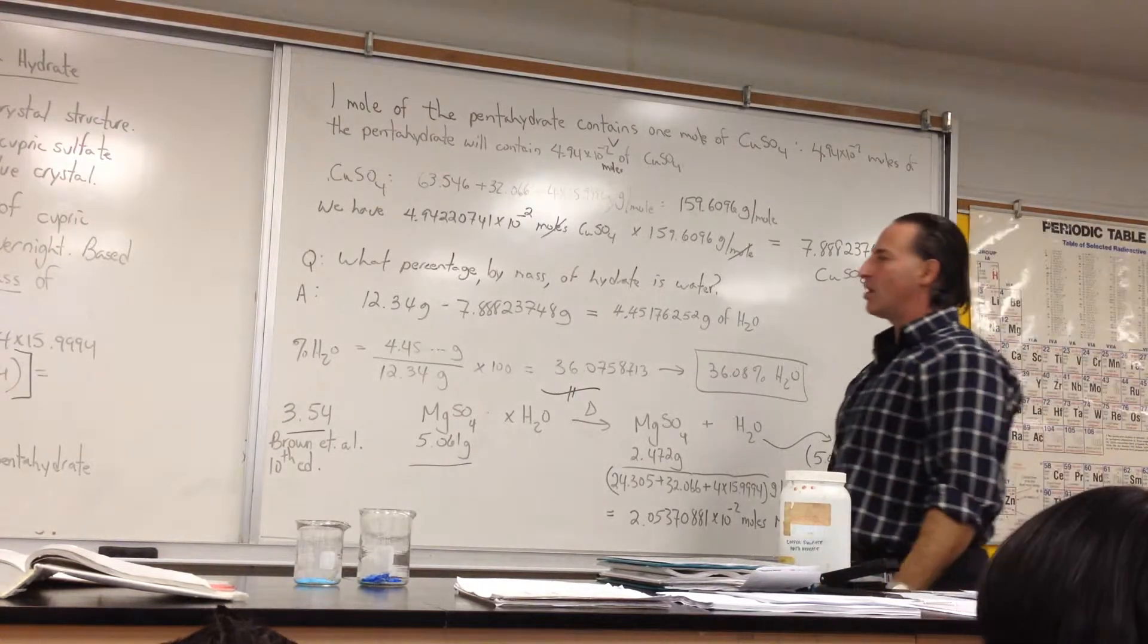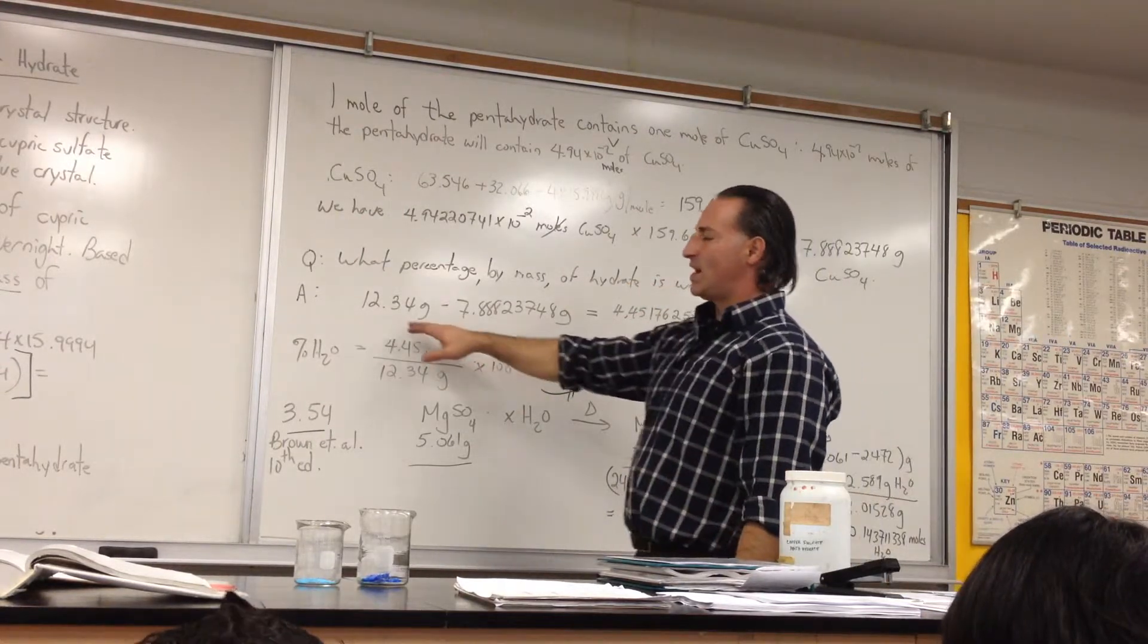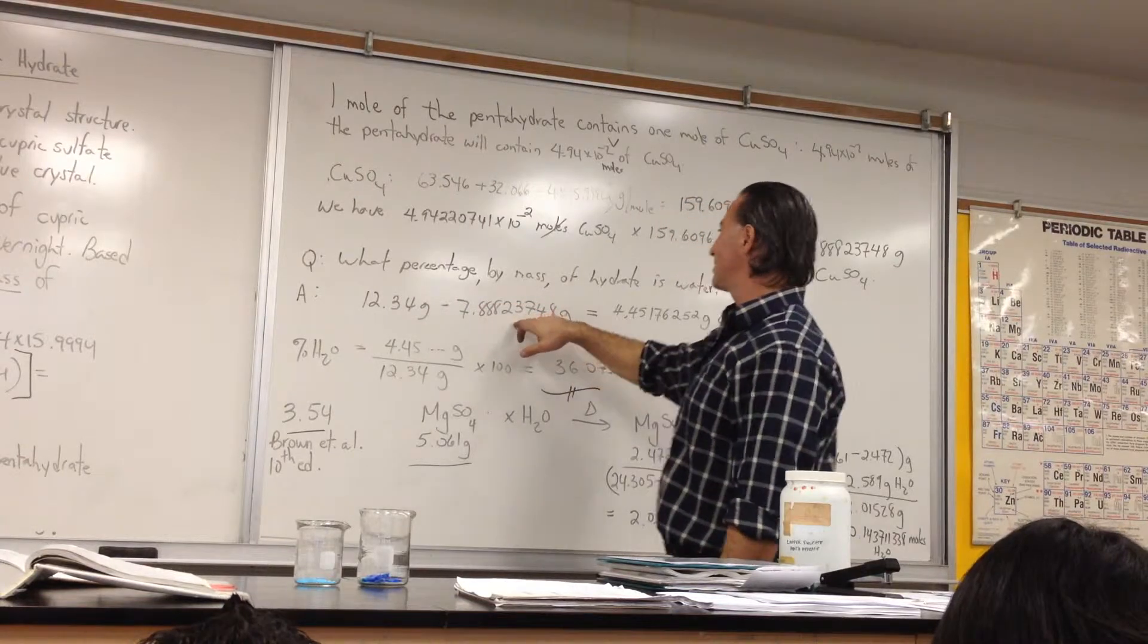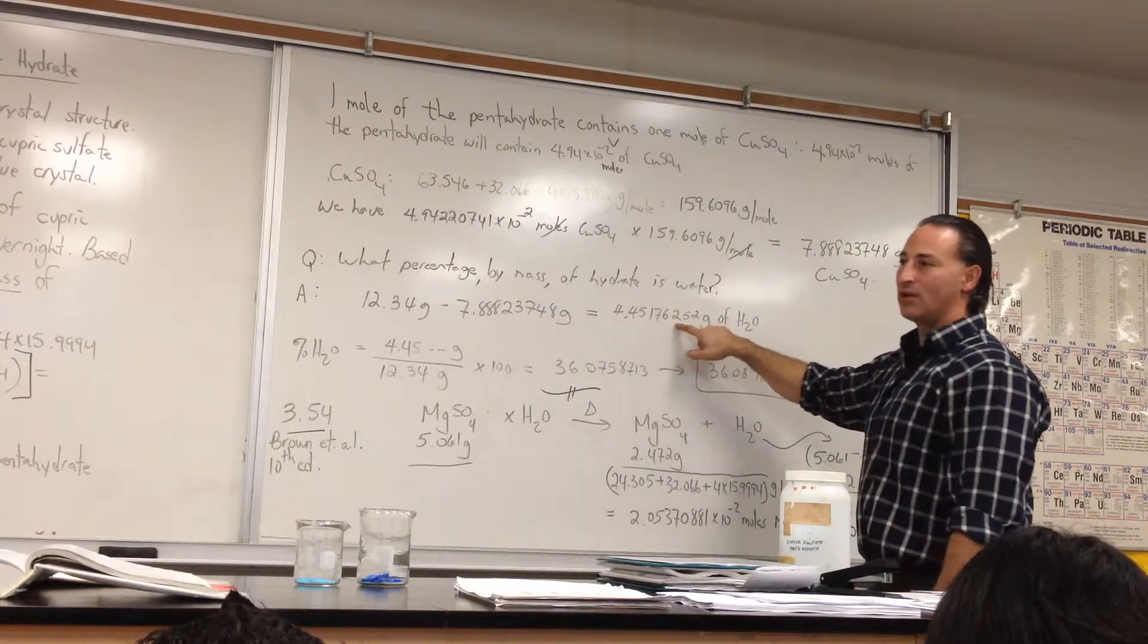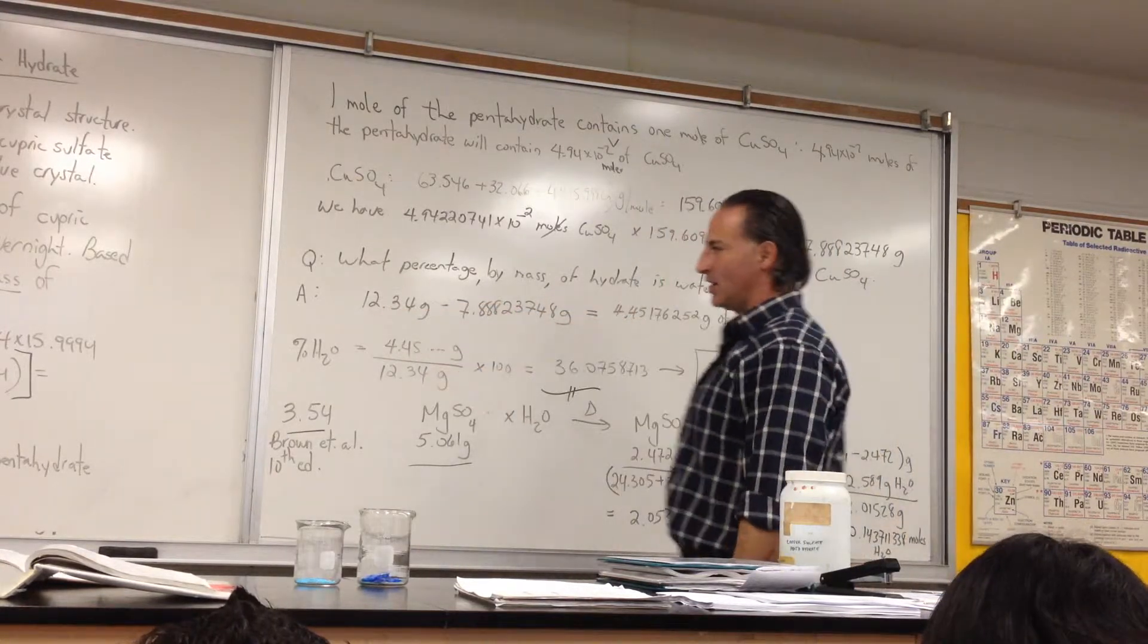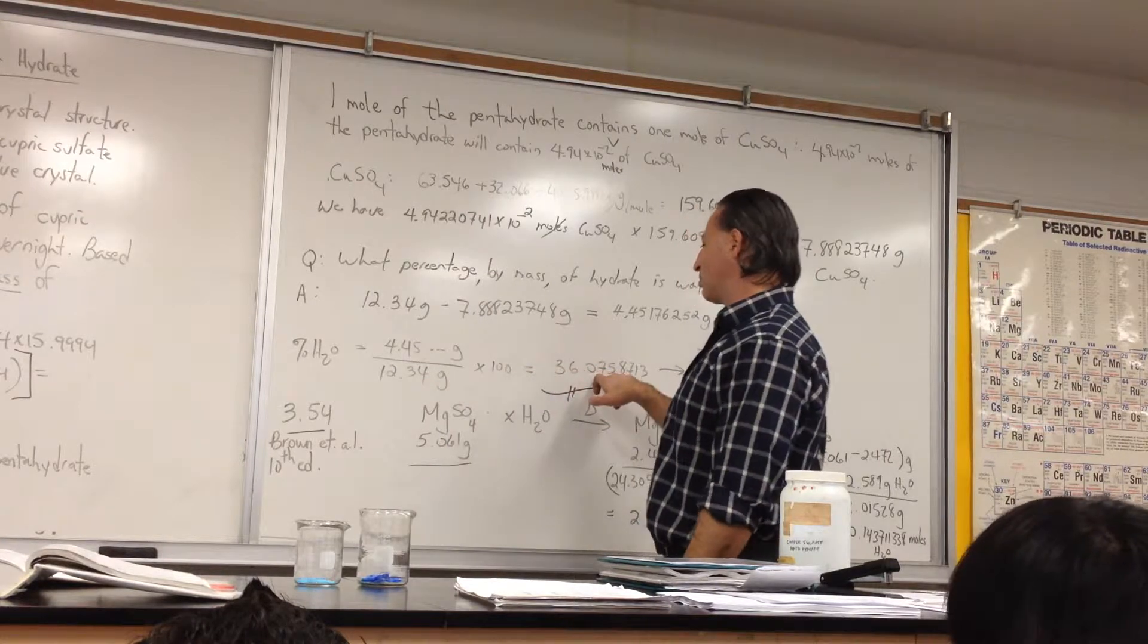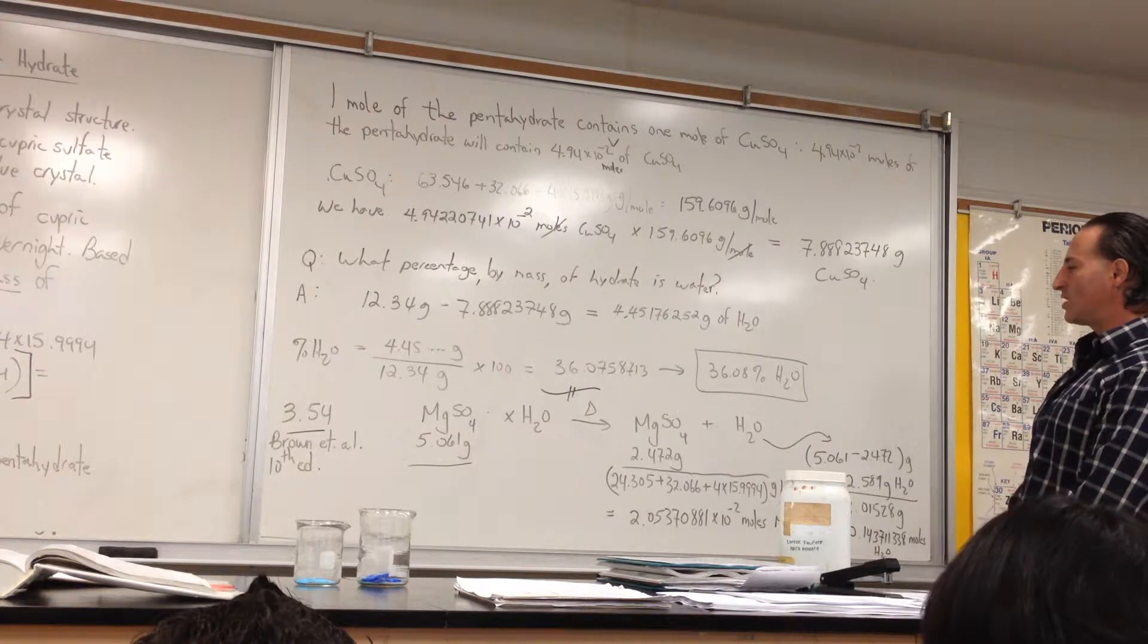So then the next question is, what percentage by mass of the hydrate is water? We do that by finding the difference in the mass between the hydrate and the dehydrated substance. So 12.34 minus the mass of the copper sulfate itself will give you the amount of water that was in it. And it was 4.45 grams of water in this particular sample. So then you take that number and divide it by the 12.34 times 100 to give you the percentage of water. So it's 36.08% water.